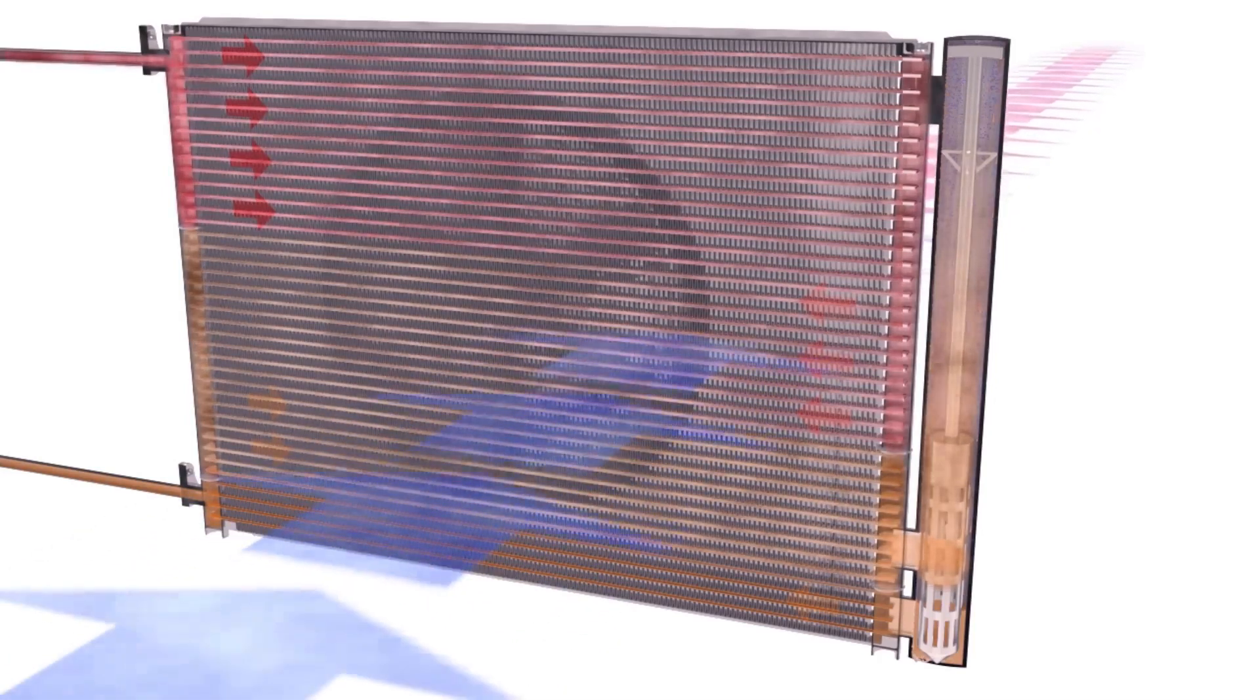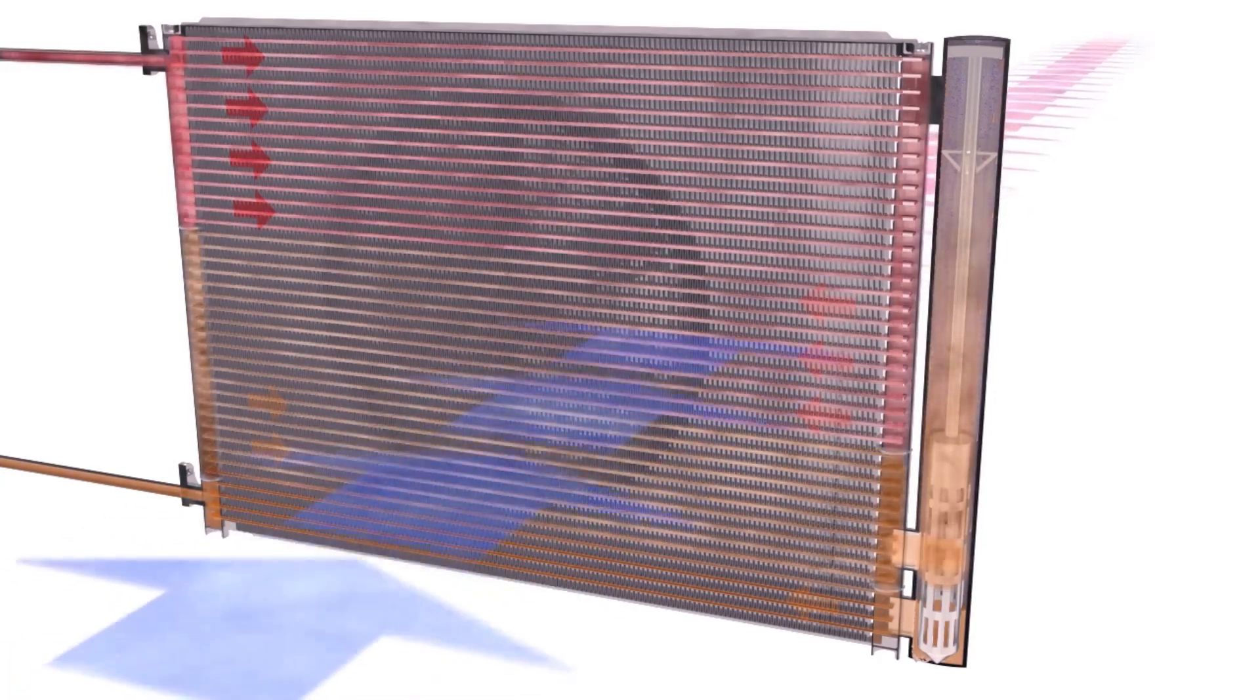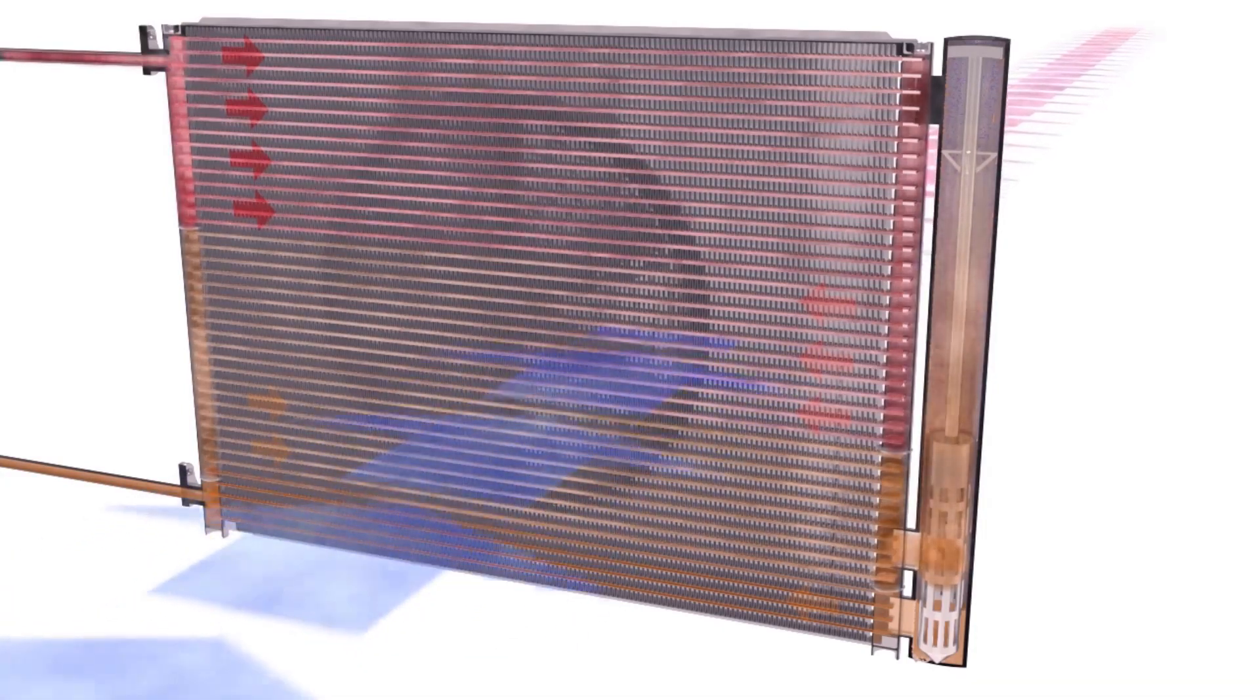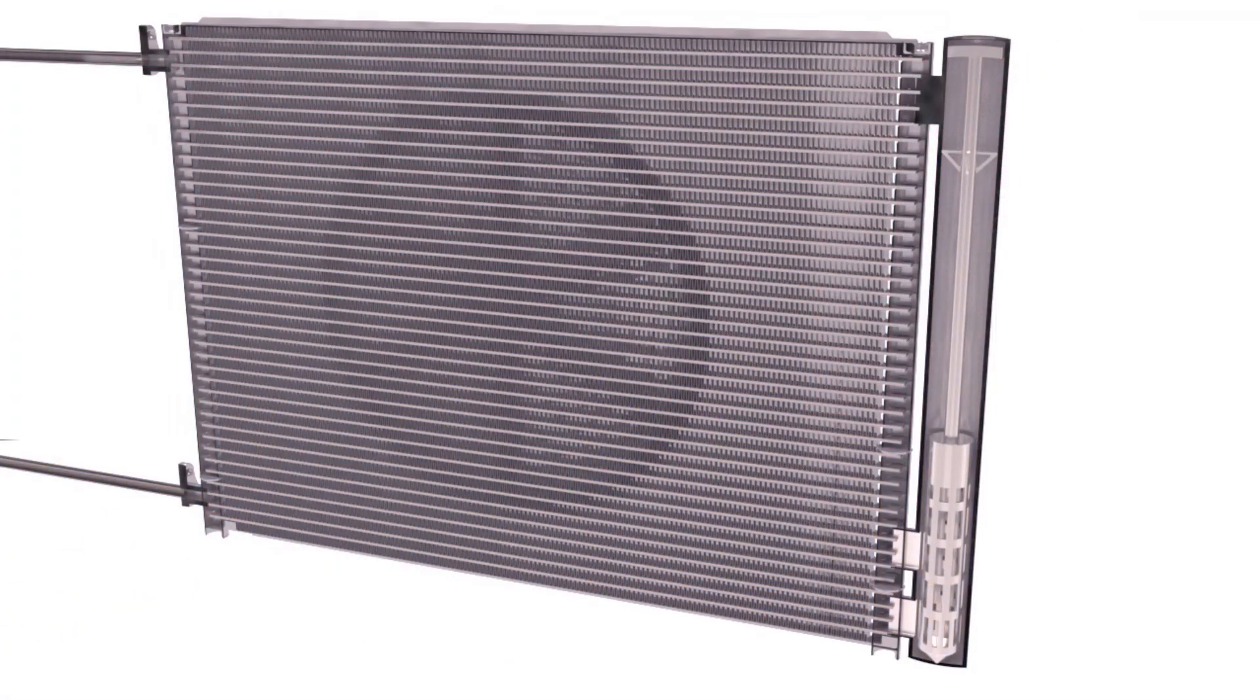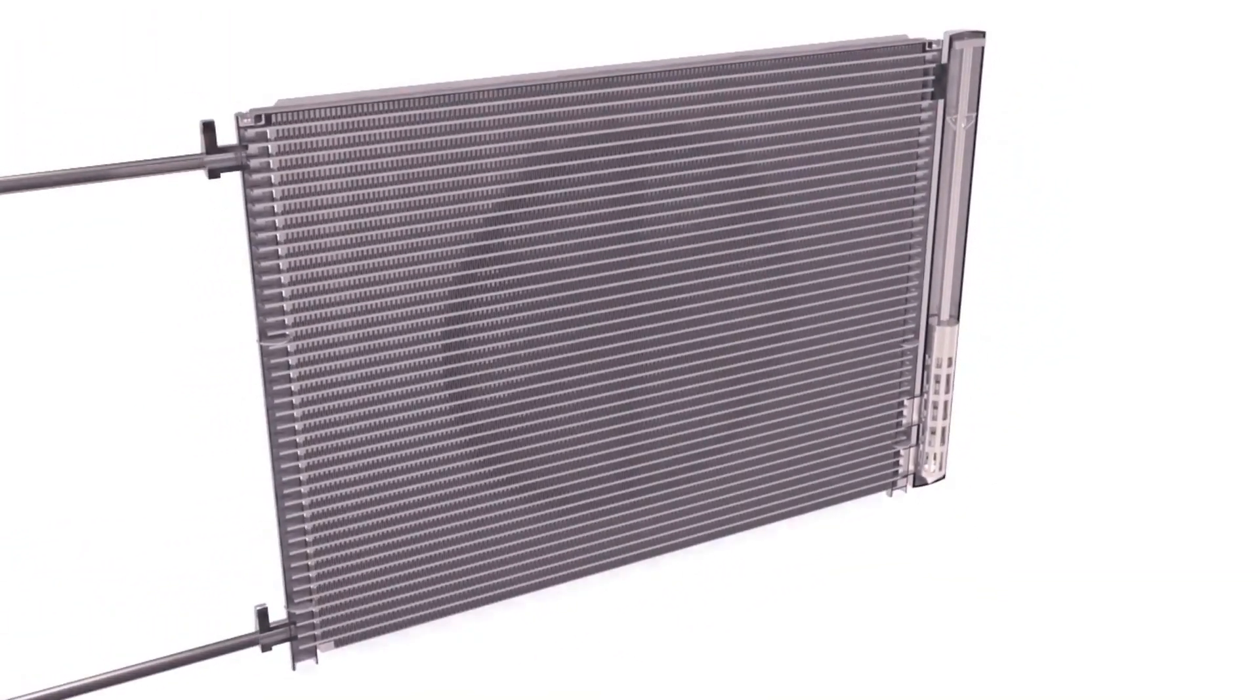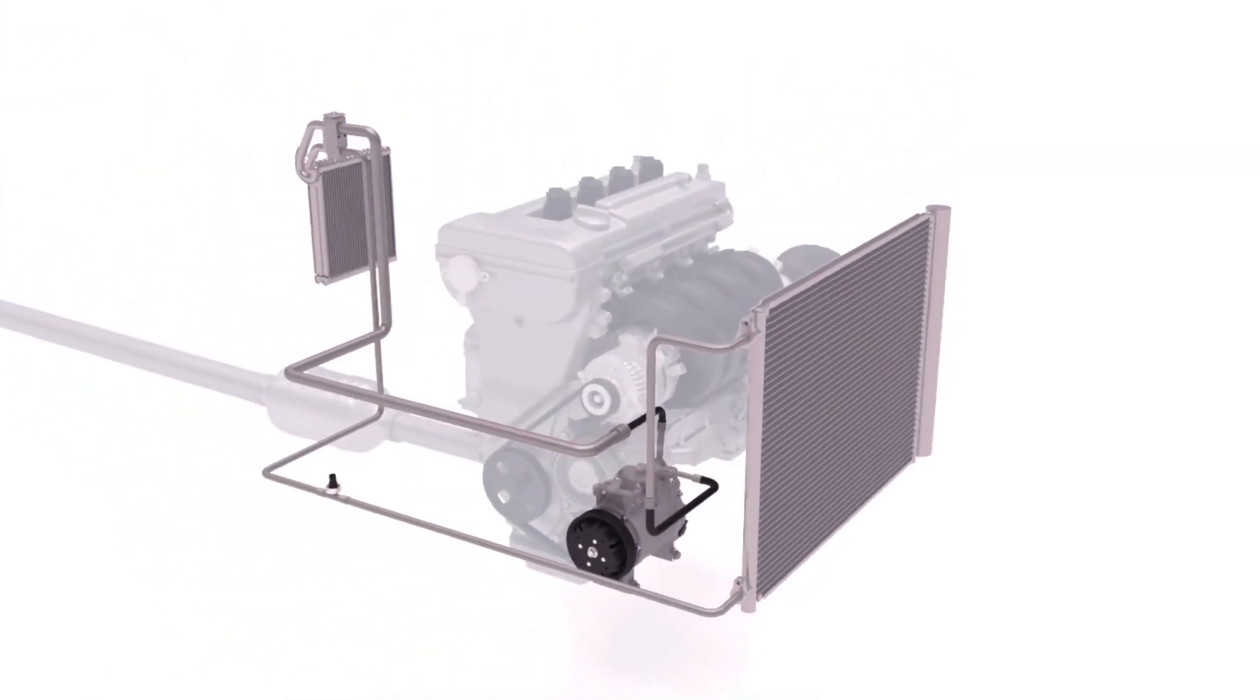The liquid refrigerant then receives additional cooling in the subcooling section, where the heat energy contained in the liquid refrigerant is again released through the condenser fins to the air. This further reduces the temperature and improves the overall cooling performance.